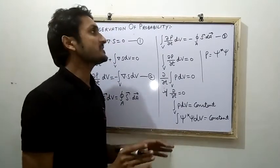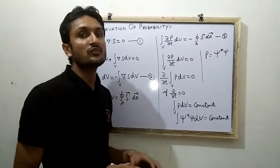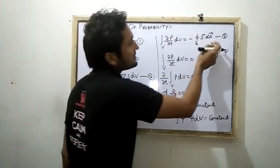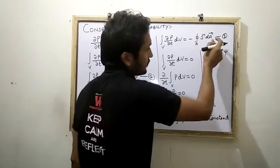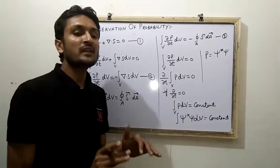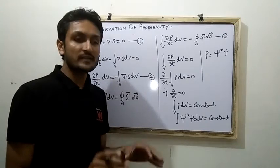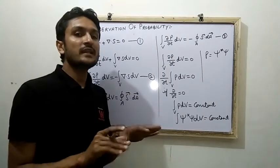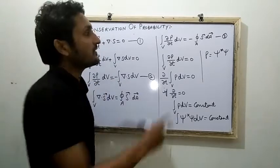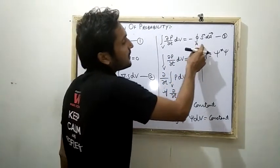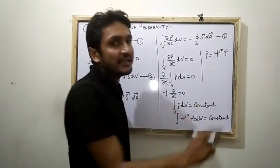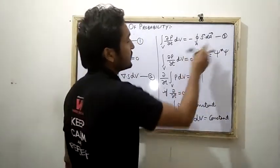Where A is the surface area and dV is the volume of the system. If we extend the surface area to infinity for the universe, the current density S goes to zero — the wave function must vanish at infinity. When we calculate the probability of the universe, at infinite surface area S is zero, so this surface integral term becomes zero.